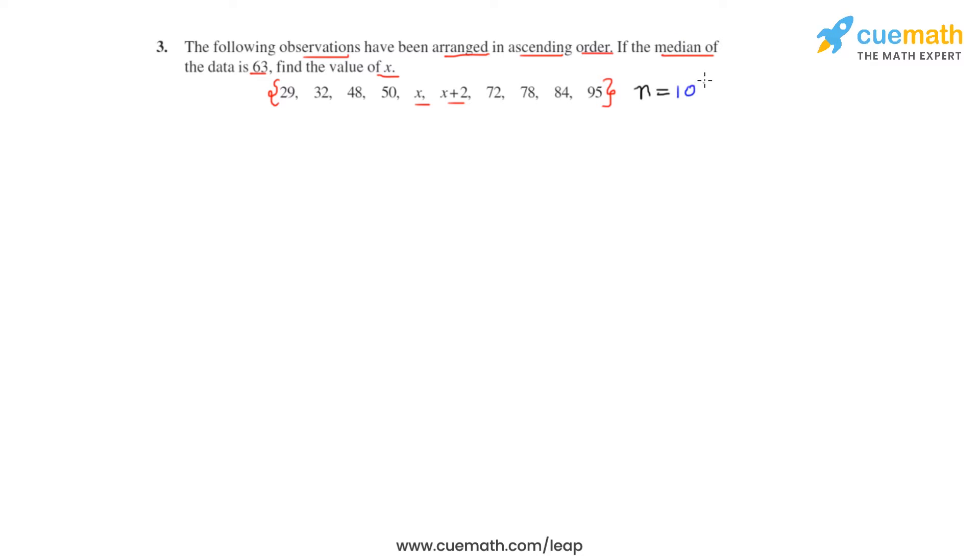10 is an even number. So, the formula to find the median for the given set of observations will be median equals the sum of the terms that we get by dividing n by 2 and the term that we get by dividing n by 2 and adding 1 to it and dividing the whole sum by 2.